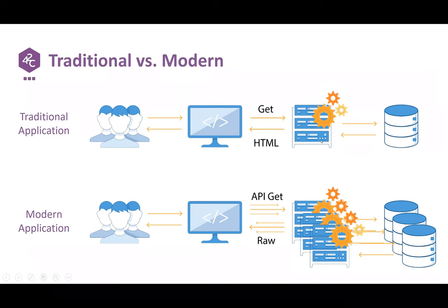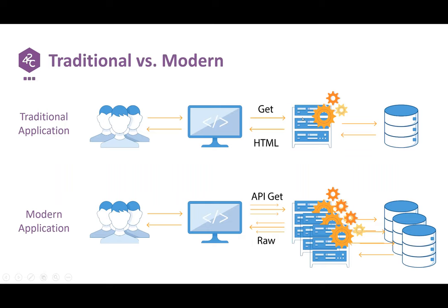In traditional web applications, you had your application server and database, and when a user wanted to use it, the browser would send a GET request and the backend would send back HTML to be rendered by the client. But today we're in the world of mobile applications, single-page web apps, and IoT devices. In all of those scenarios, a lot of the processing and logic is at the client, which typically works with the backend by sending API requests, getting back raw data, and doing processing client-side.